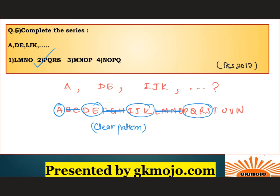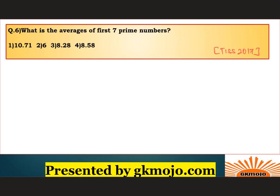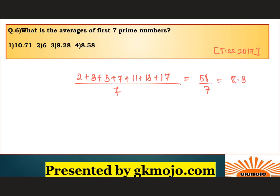Question 7: What is the average of the first seven prime numbers? TISNET frequently asks questions on prime numbers, averages, and statistics. The first seven prime numbers are 2, 3, 5, 7, 11, 13, and 17. Their sum is 58, and 58 ÷ 7 ≈ 8.28. The closest answer is option 3. Note: students often make mistakes by forgetting that 2 is also a prime number.